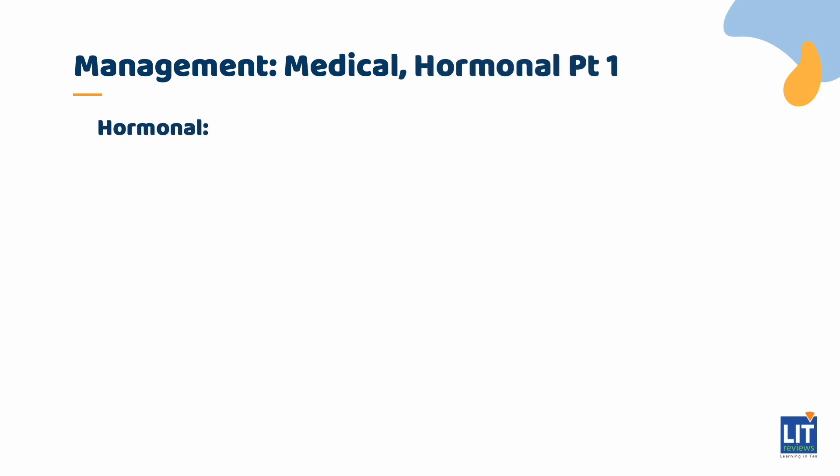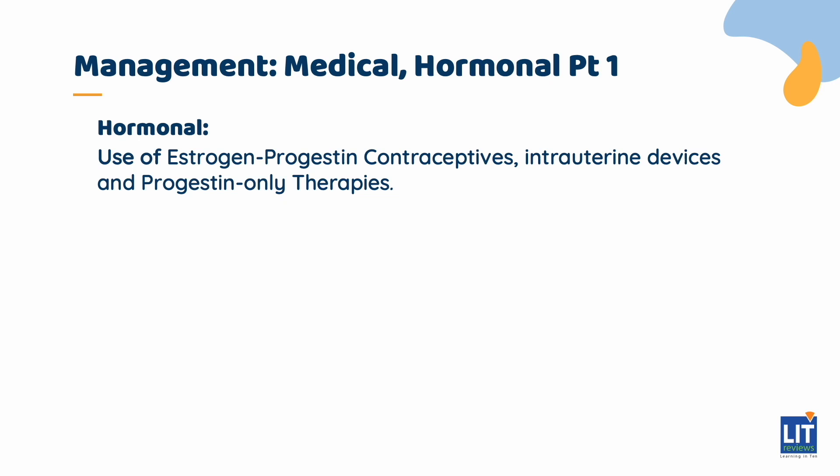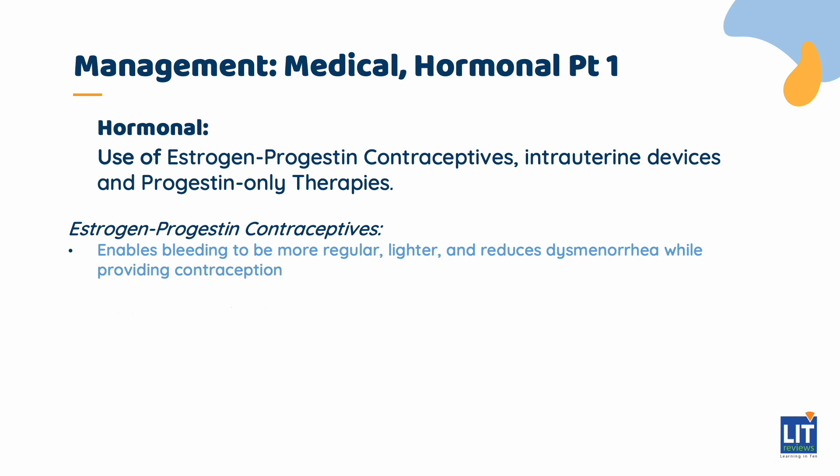There are several hormonal therapies for AUB. Combined estrogen-progestin contraceptives enable bleeding to be more regular and lighter, reduce dysmenorrhea, while providing contraception. There are various routes of administration including orally, via transdermal patches, or vaginal contraceptive rings. However, estrogen-progestin contraceptives are contraindicated in patients with increased risk of thrombosis.